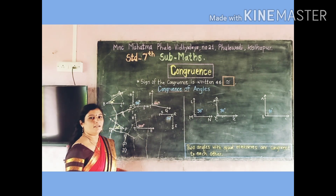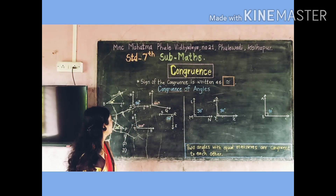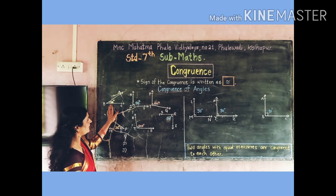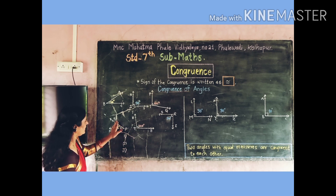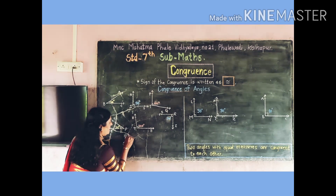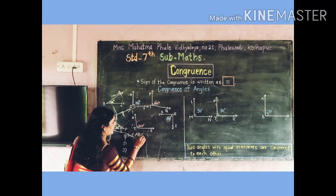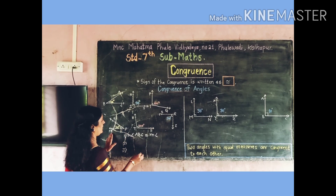I write names of the angles which are equally measured. Measurement of angle ABC is equal to 35 degrees. Among these figures, measurement of angle SPM is also 35 degrees. So I write here: measurement of angle ABC is equal to measurement of angle SPM.